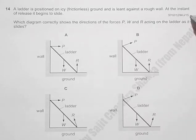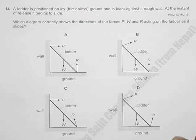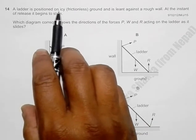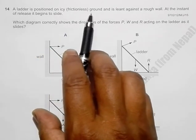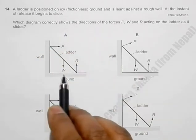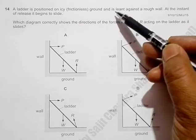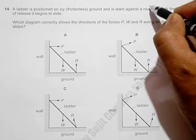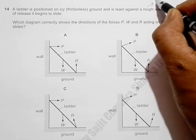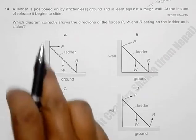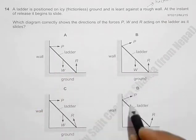This is question 14 from 2015 June paper 1.2. A ladder is positioned on icy frictionless ground, which means the ground shown here is frictionless, and is leant against a rough wall, which means there we have got friction. So the wall has friction and the ground has no friction.